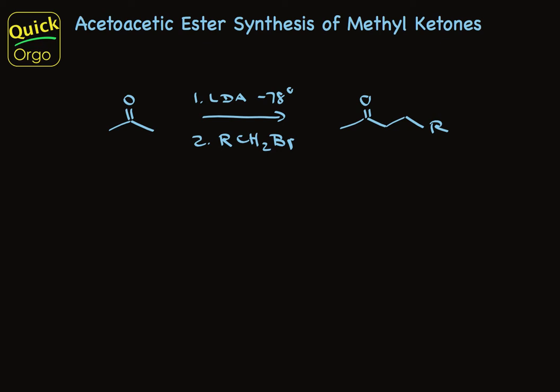The chemistry you see here is really appealing. You start with acetone, a small, cheap molecule. Treat it with a strong, bulky base at low temperature. In a second step, you add an alkyl halide, and out comes a substituted acetone. You've taken acetone and attached an alkyl group to it. You've made a carbon-carbon bond.